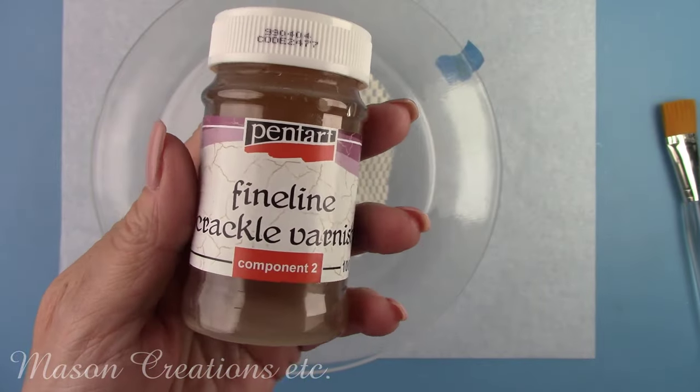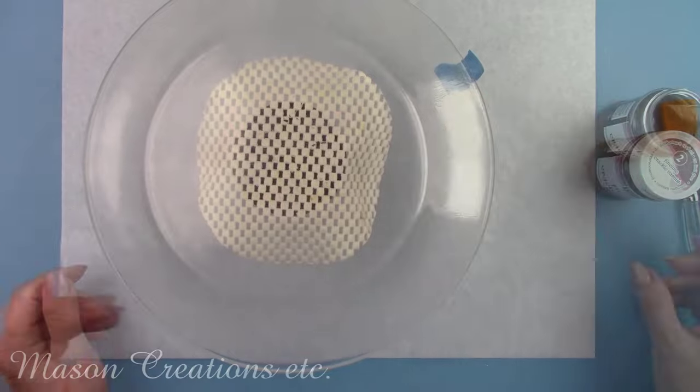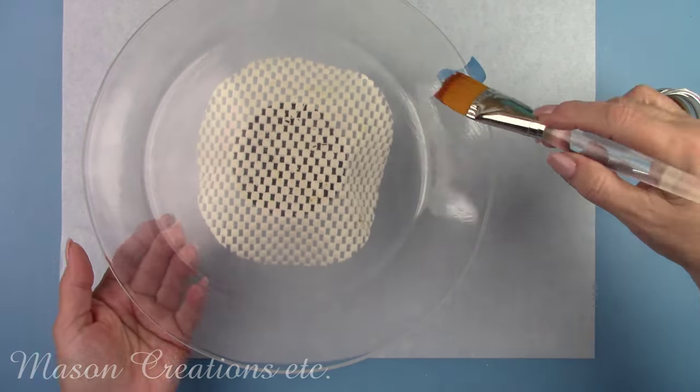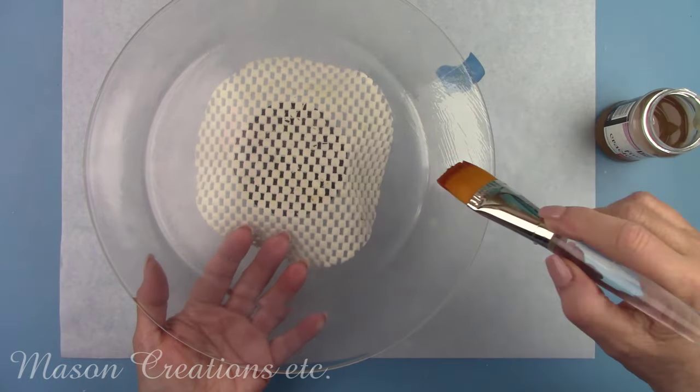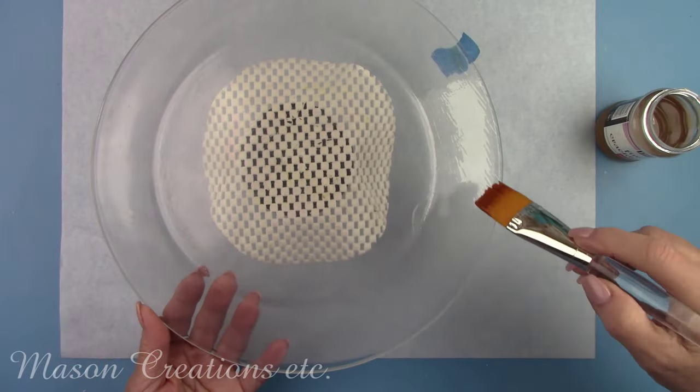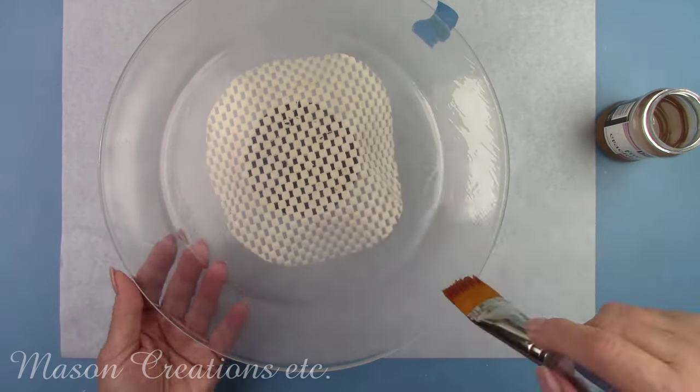Once dry, I'll brush on component number two. This step is an amber color. Use thin, even strokes. If you get a buildup or drips anywhere, it'll show when dry. I'll let this dry for a couple of hours. Once dry, you'll see the cracks.